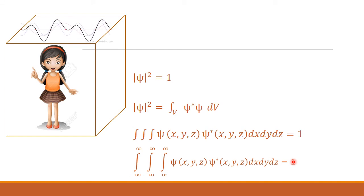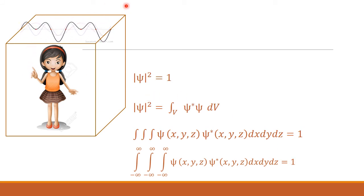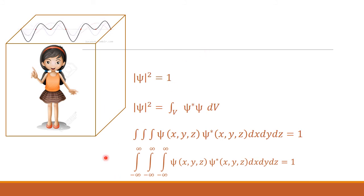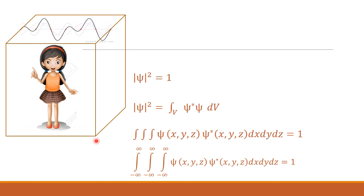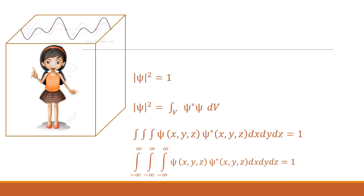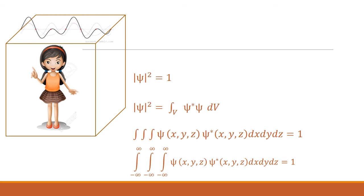If we generalize this idea, then finding the system in a box of infinite volume — that is, when the limits run from minus infinity to plus infinity in all directions — the probability of finding the system will equal 1. This is a very generalized idea that tells us every matter wave satisfies: the integral of psi-star psi over all space equals 1 for the entire universe, from minus infinity to plus infinity.